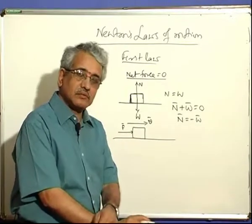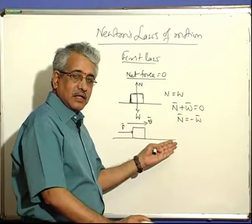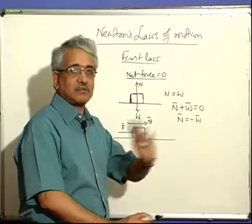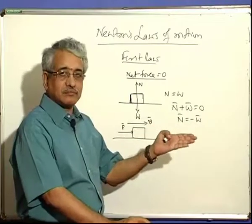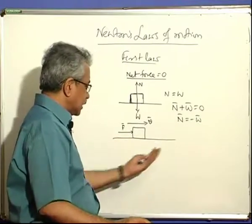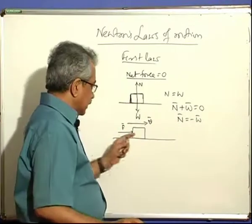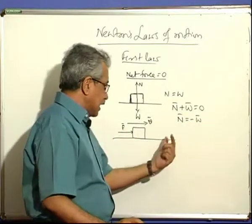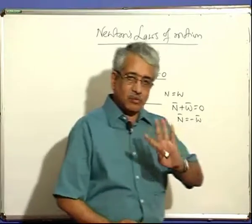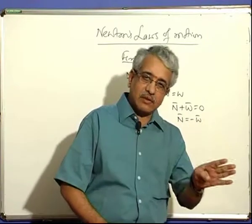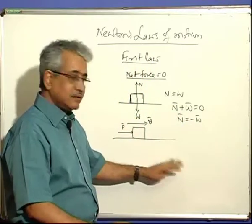Suppose you withdraw this force F. The body will move for some time in that direction because there is friction, and then it slows down and stops. So the motion is not uniform. To start the motion, an applied force was required. When you withdraw this force, another force called friction acts on the body, and the body comes to rest. In any case, force was responsible for the change in motion of the body.